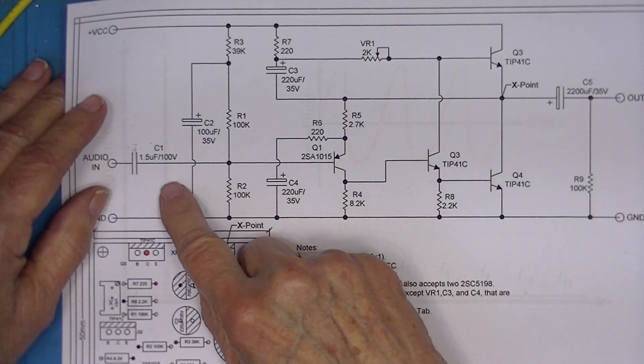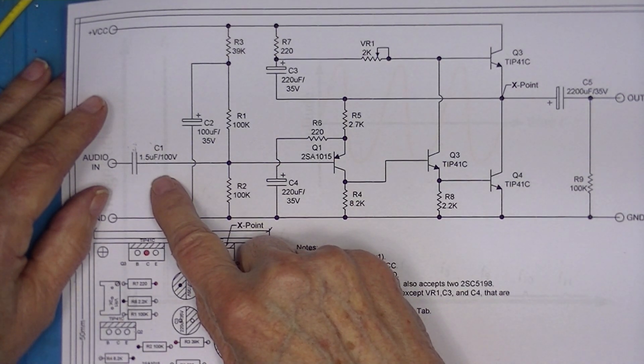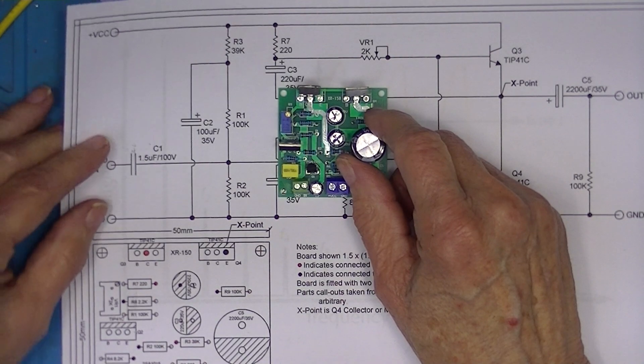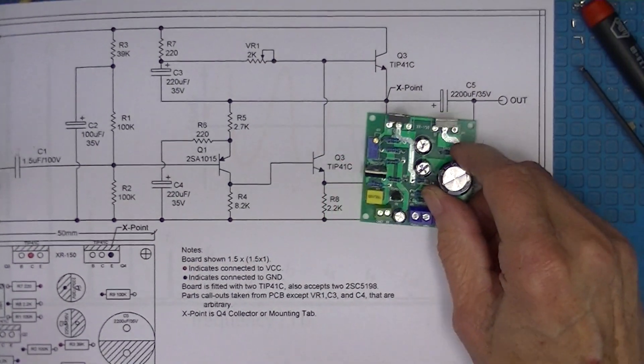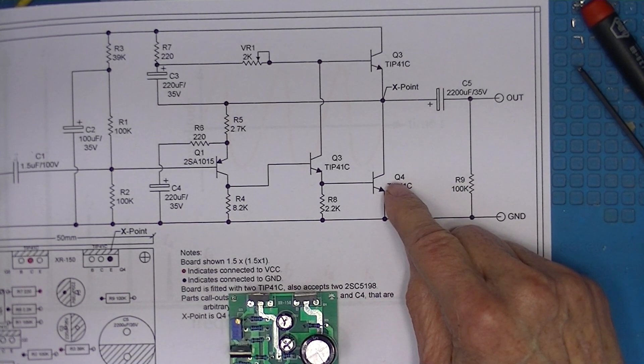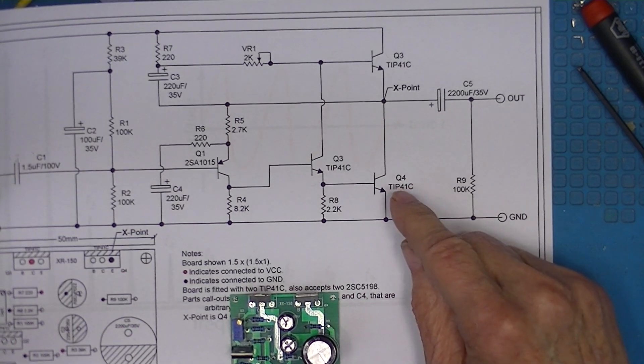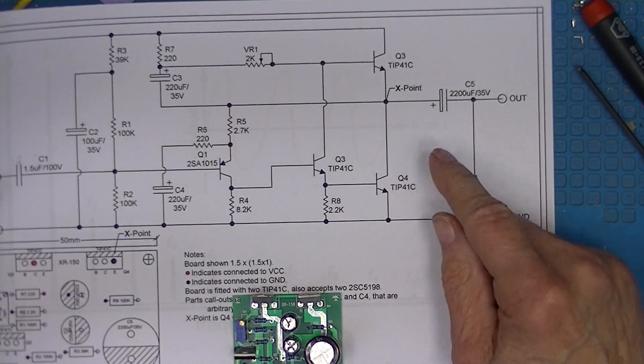We have a 0.15 microfarad input capacitor. The transistors are all different than the JLH69 amplifier because the ones that are in the original are no longer available.